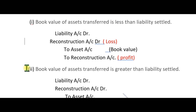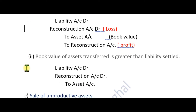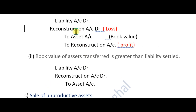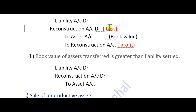If the book value of assets transferred is greater than the liabilities, there will be a profit or loss. The entry will be: Liability debit and Reconstruction Account debit to Assets Account, with the difference going to the Profit and Loss account.